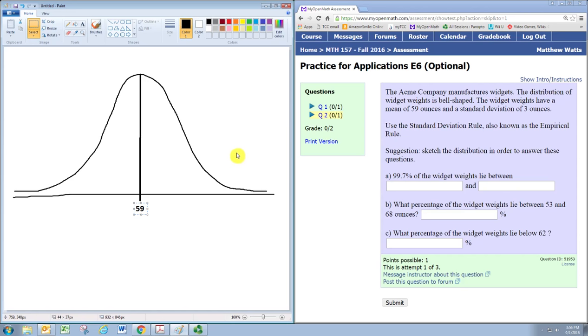Now, on each side of the middle we need to split into three pieces. Each one is going to be one standard deviation away from the other. I don't have to be exactly in the right place. That would work. So as we move along to these lines we are increasing by one standard deviation, so we would just add the standard deviation to the mean.